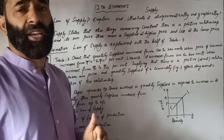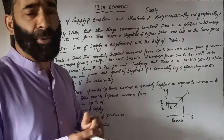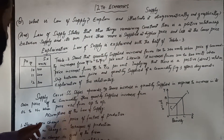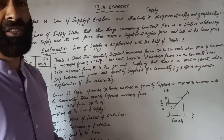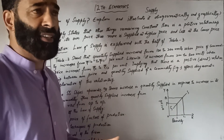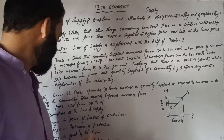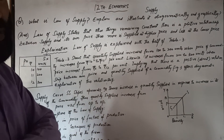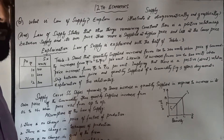Now we see the assumptions of the law of supply. The law of supply has a few assumptions. The first is: other things remain constant. Other things means — assumption one: there is no change in the price of factors of production such as labor, machines, and land. Assumption two: there is no change in the technique of production.